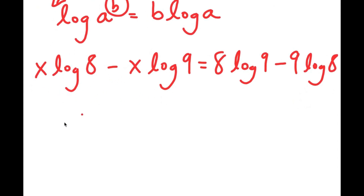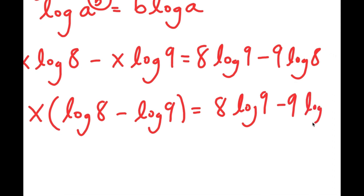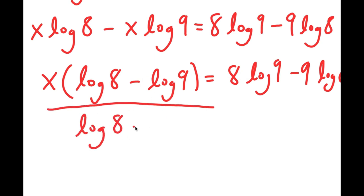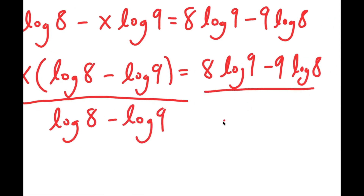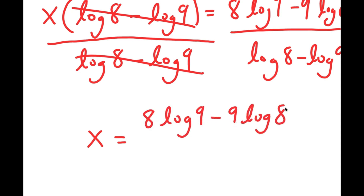Now because both terms on the left have x in them, I can factor out x. So I get x times (log 8 minus log 9) equals 8 times log 9 minus 9 times log 8. To find x, I divide both sides by (log 8 minus log 9), giving x equals 8 times log 9 minus 9 times log 8, over log 8 minus log 9.